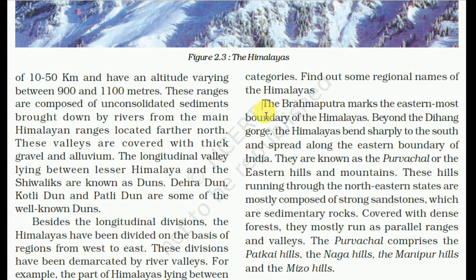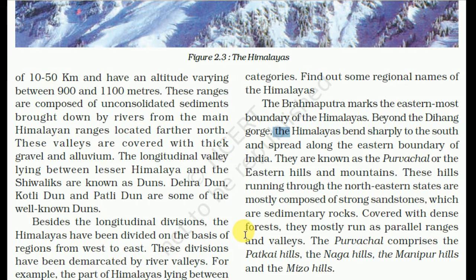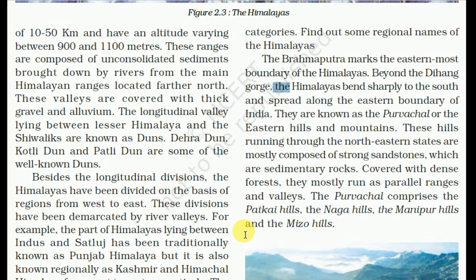The Brahmaputra marks the easternmost boundary of the Himalaya. Beyond the Dihang gorge, the Himalayas bend southward and spread along the eastern boundary of India. They are also known as the Purvanchal. These are the eastern hills and mountains running through the northeastern states, mostly composed of sandstone, which are sedimentary rocks covered with dense forest. They mostly run as parallel ranges. The Purvanchal comprises the Patkai hills, Naga hills, Manipuri hills, and Mizo hills.